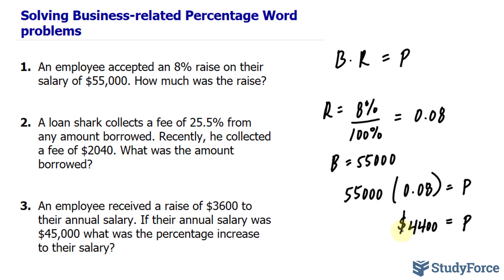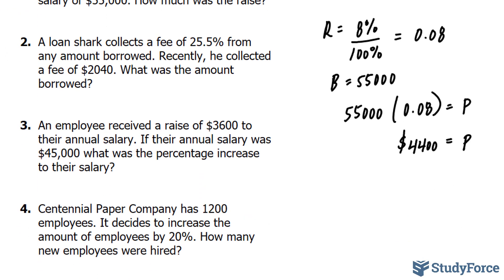In solving these problems, it's always appropriate to end with a therefore statement. Therefore, the employee will get a raise of $4,400, which represents 8% of $55,000. Question number two asks, a loan shark collects a fee of 25.5% from any amount borrowed. Recently, he collected a fee of $2,040. What was the amount borrowed?